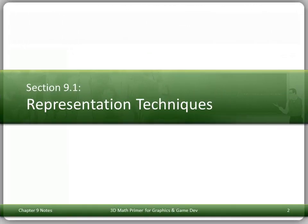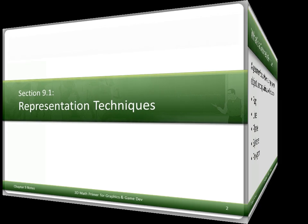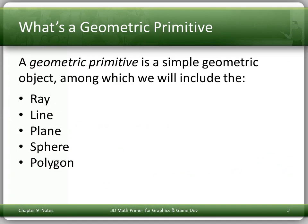Let's start with some things that you should maybe have seen in high school but have probably forgotten by now — some representation techniques. I use the term geometric primitive in the title. A geometric primitive is a simple geometric object that we can build more complicated objects from, things that we commonly use in computer games like rays, lines, planes, spheres, and polygons.